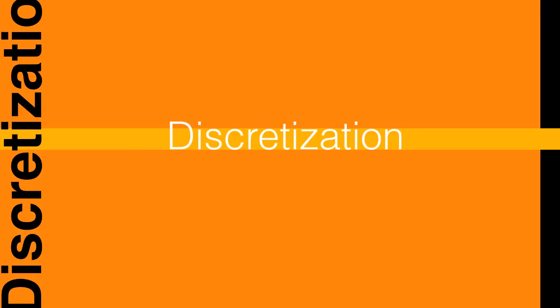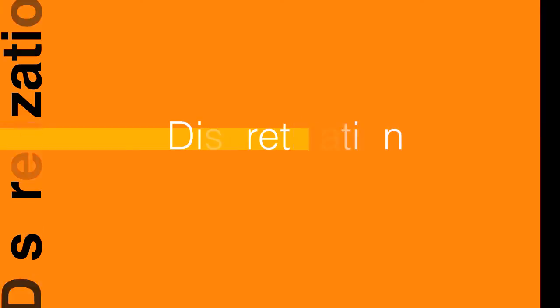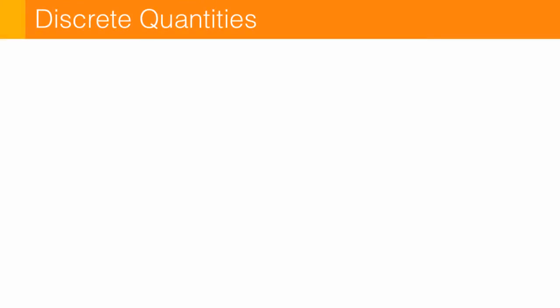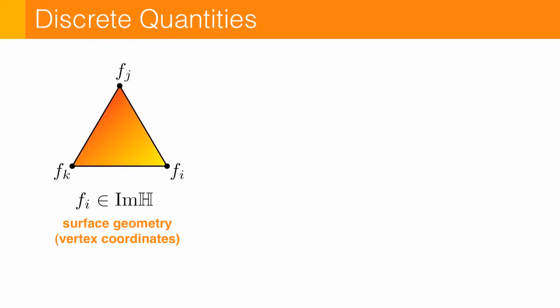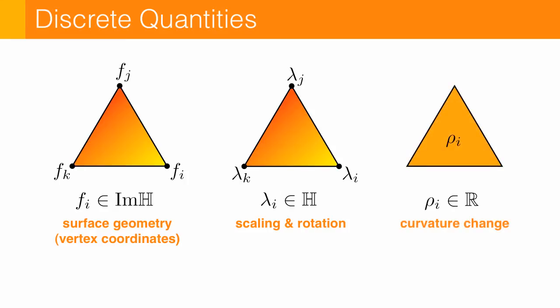So there's the high level procedure. And now the question becomes, how do we actually compute solutions on something like a triangle mesh? So first, let me just say where all of these quantities live in the discrete setting. F is just going to be our usual vertex positions, except now encoded as imaginary quaternions. We're also going to put a quaternion lambda at each vertex and a real value rho on each face.